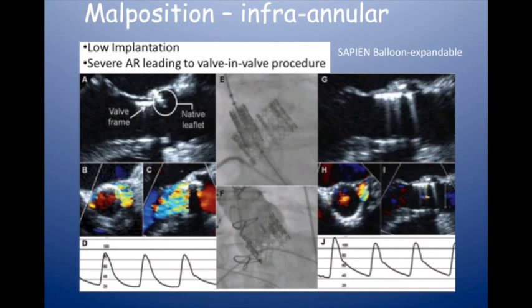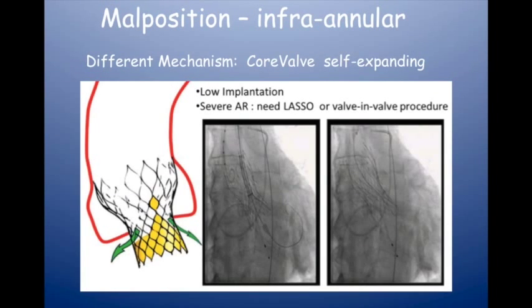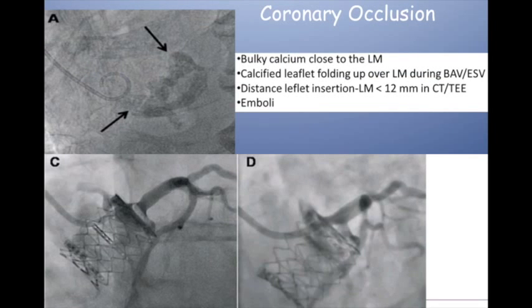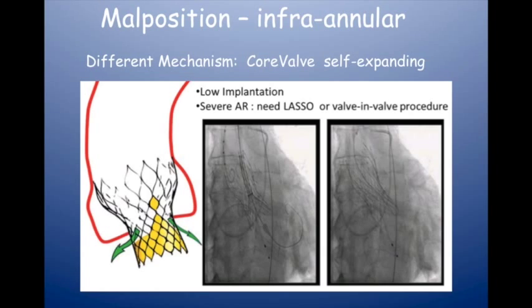The same can happen with the CoreValve — which has a stent frame of 55 mm. If placed too low in the LVOT, there is no valve tissue covering the annulus on the inside, and you get free-flowing aortic regurgitation beside the prosthesis. The fix is to put a second valve in starting higher up, so the second valve sits a bit higher. That's a good fix, but you need two valves.